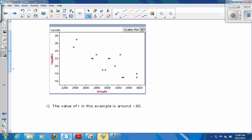So it turns out that the value, the R value here is about negative 0.82. And I will tell you how to figure that out in a couple minutes.